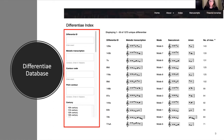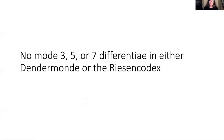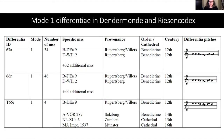I used this differentiae database to search for all of the differentiae found in Dendermonde and the Riesen Codex and found some very interesting results, which I'll walk through mode by mode. Differentiae usage is inconsistent in these manuscripts — not every antiphon has one. As you can already see on screen, there are no mode 3, 5, or 7 differentiae in either Dendermonde or the Riesen Codex, and in fact there are no mode 5 or 7 antiphons in those two manuscripts either.